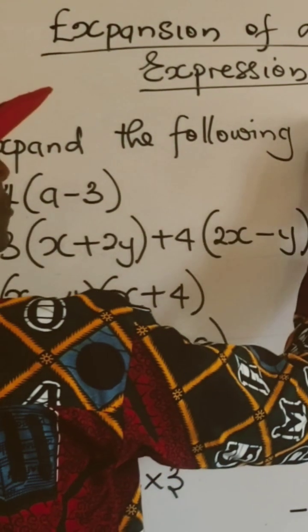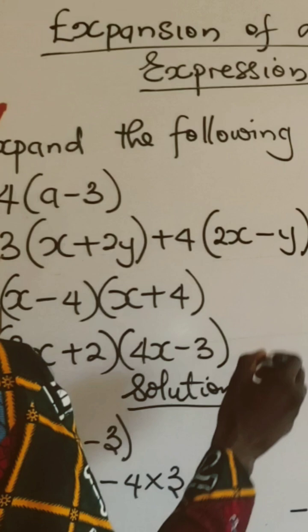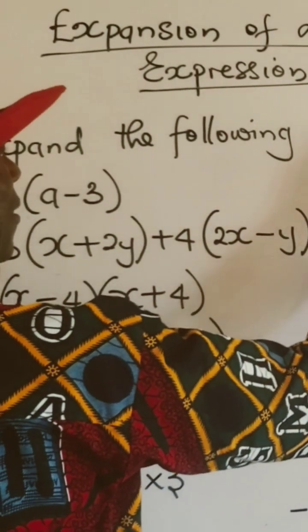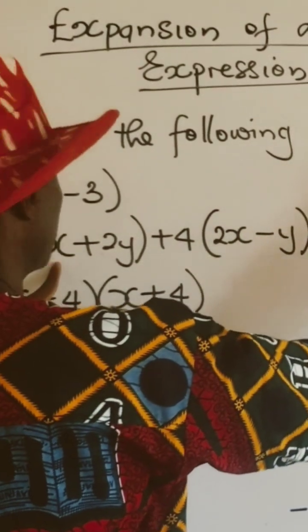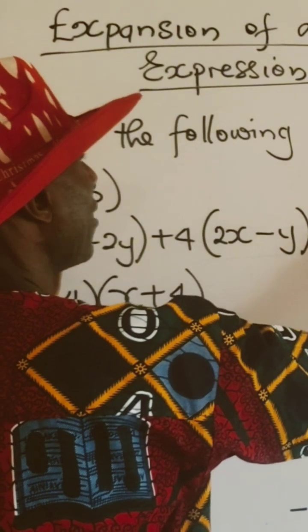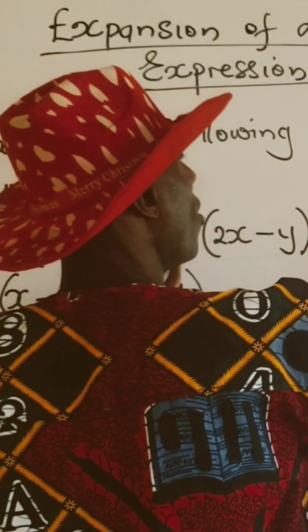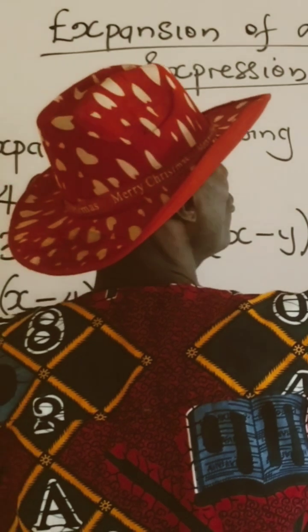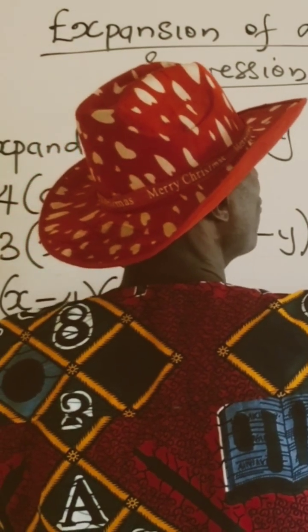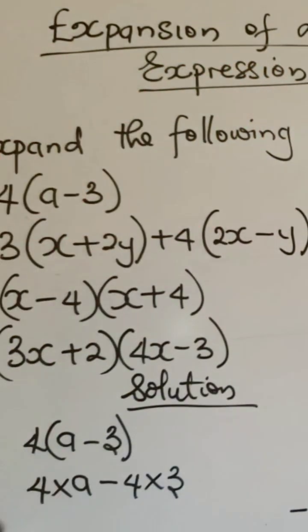Let me take number 2. We say 3 into (x+2y) bracket open and close, plus 4 into (2x-y). Now,